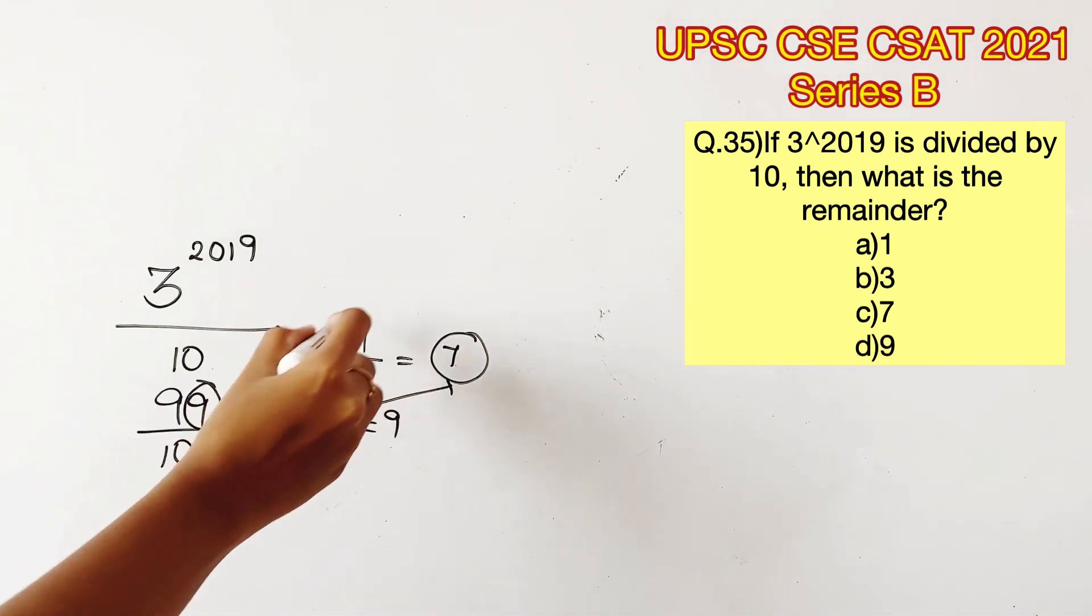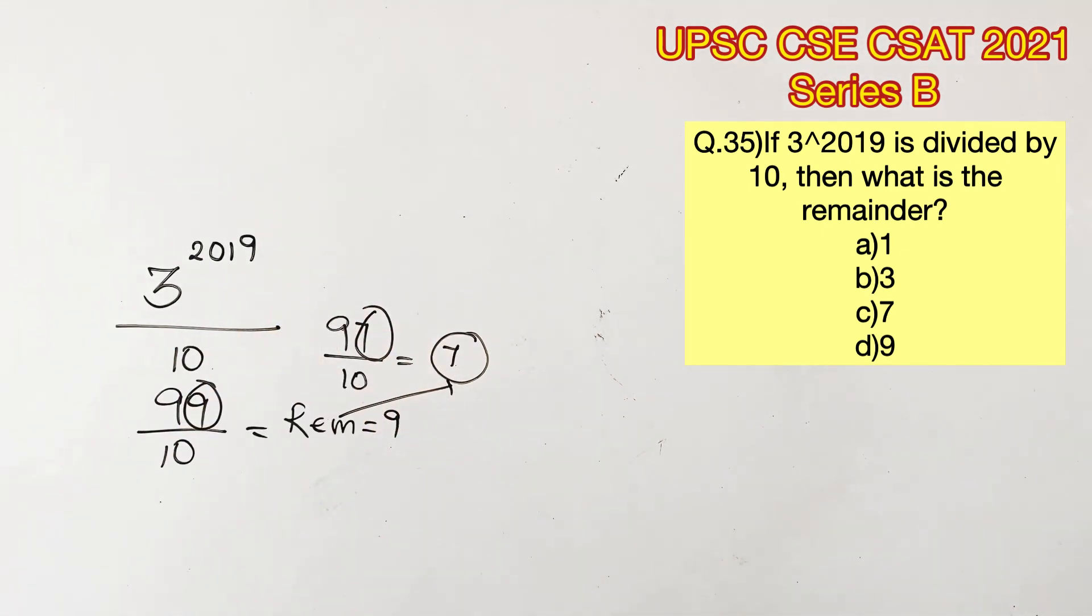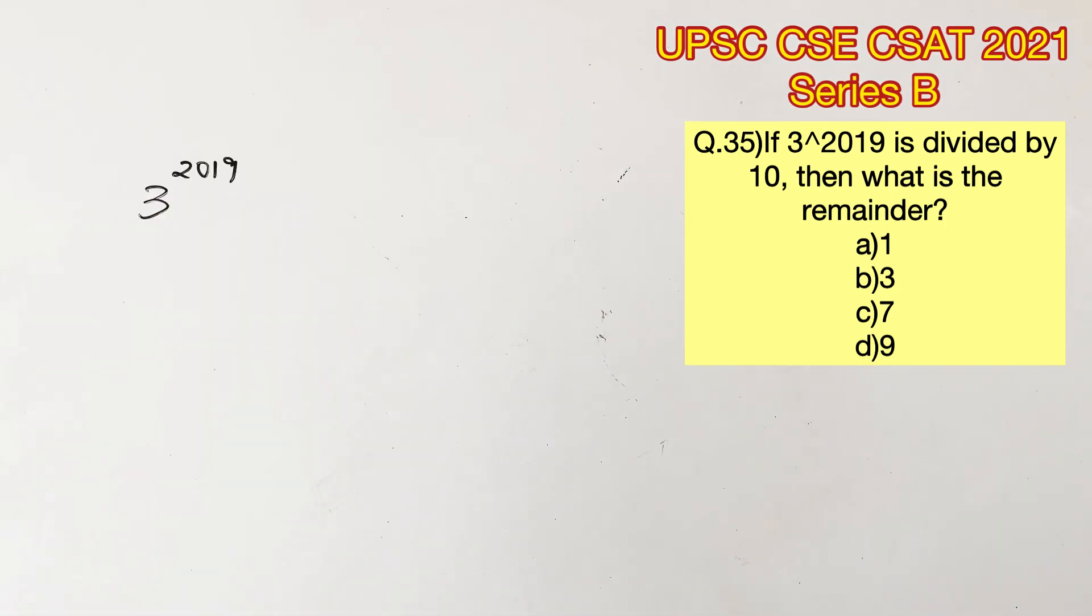If you notice the unit digits in both cases, it will be exactly the same as the remainder. Therefore, we can conclude that any number divided by 10 will give a remainder of the unit's place. So now all we have to do is find the unit's place of this given value.